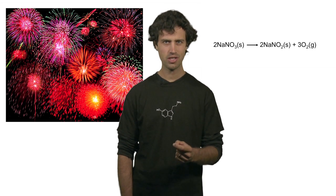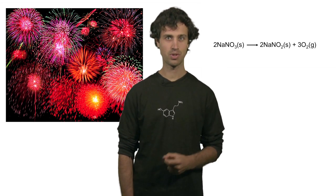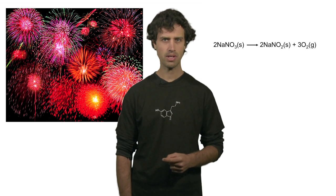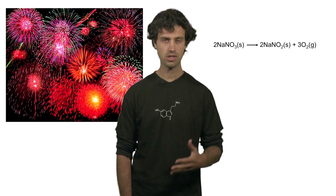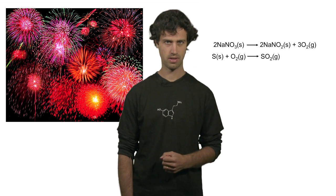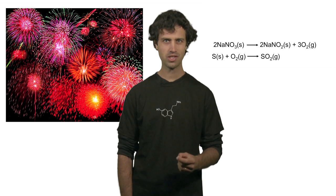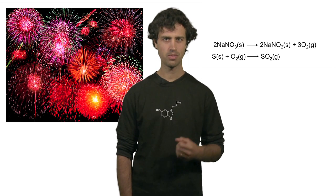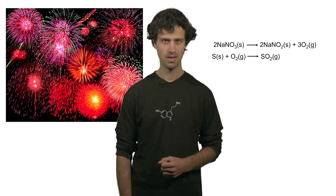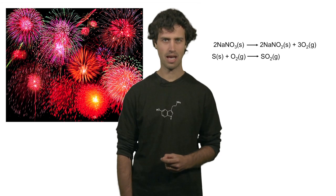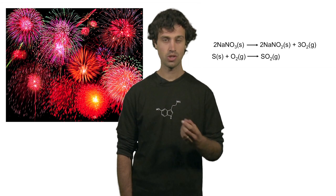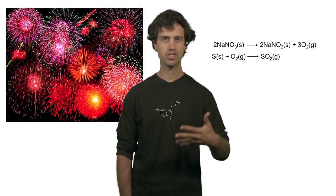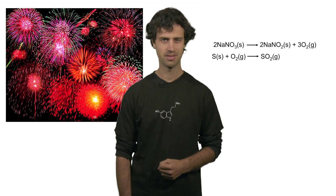The oxygen and heat produced in this step can then be used by a reducing agent, for instance sulfur, which reacts explosively to form sulfur dioxide. The second step is used in fireworks to give fireworks their explosive effect.